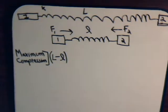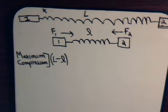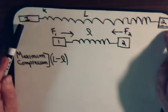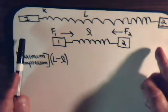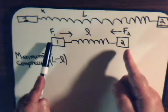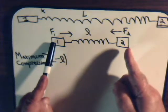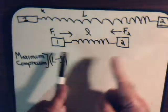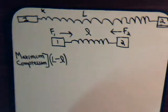Before we started compressing the spring, the system was just sitting here, so it had a momentum of zero. That means while we're compressing it, the total momentum is zero. Then when we release it, there still is no net external force being applied to this system. So even as the blocks are moving back and forth, there is still no total momentum in the system.